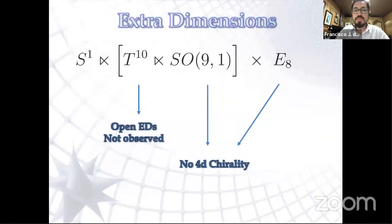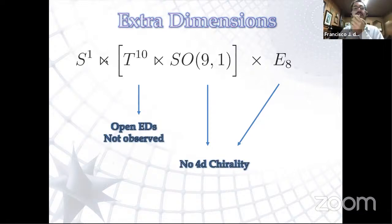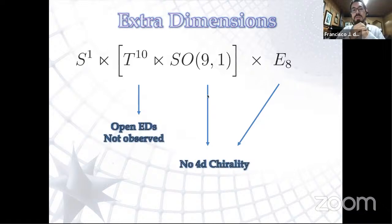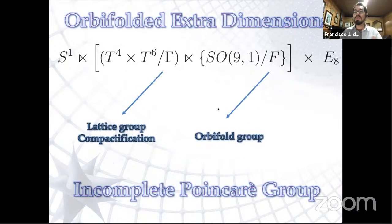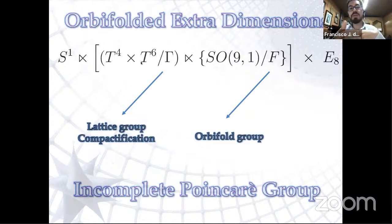Starting from extra dimensions, the full symmetry includes N=1 SUSY, the Poincaré symmetry of extra dimensions, and E8. There are big problems: ten translations mean open extra dimensions, which we don't observe. Also, enlarging the Lorentz symmetry to include even one extra dimension makes all representations real — there is no chirality. This is the same problem as with E8. The solution is to not have the full Poincaré symmetry of the extra dimensions but to have them orbifold-folded.